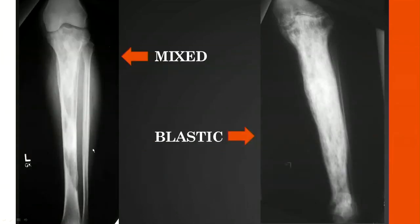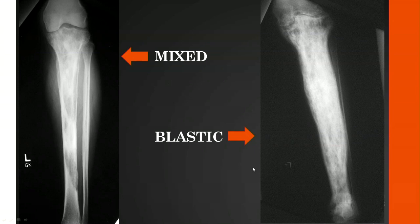Here we have the mixed phase followed by the blastic phase. You can see this person over time developing Paget's all the way to the end of bone and the articular surface of the tibia. In the blastic phase, there is more sclerosis and greater involvement.